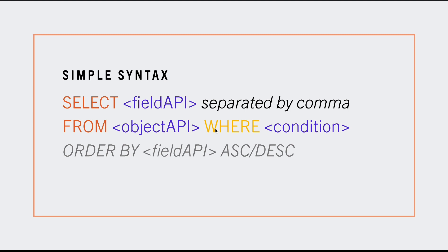WHERE is optional but highly recommended. If you are not using WHERE, you're going to get all the records in your org, which might be in the millions, so you might run into issues. Usually when you're running a query, you're interested in finding something specific about the data. WHERE is like your filter in reports or list views. For example, it could be all your accounts that start with A, all accounts with a particular industry type, all accounts in healthcare, or all opportunities that are supposed to close this year. It's very powerful.